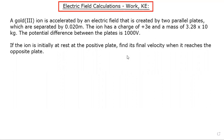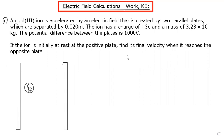Taking a look at this example, we've got a gold three plus ion, so we'll represent that diagrammatically with Au³⁺. It's accelerated by an electric field that's created between two parallel plates, so we've got a parallel plate here and a parallel plate here. They're separated by 0.020 meters.